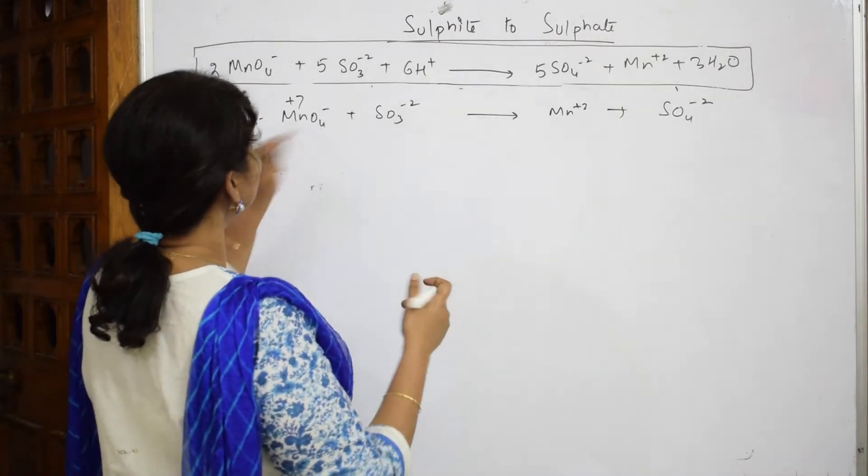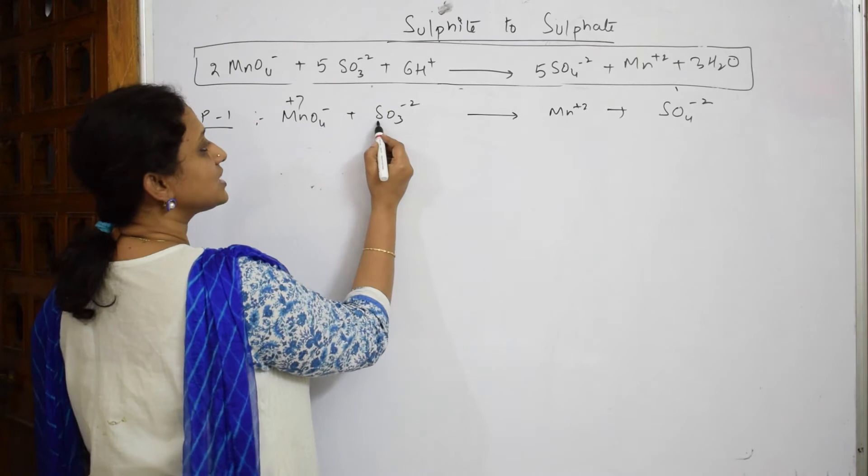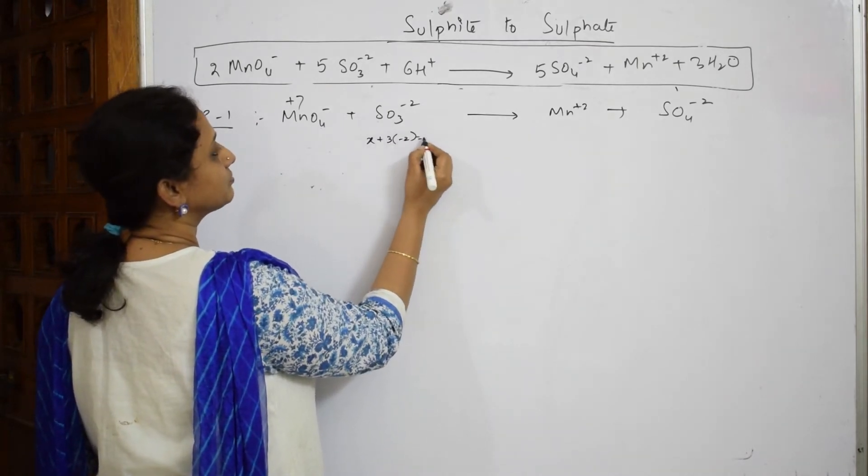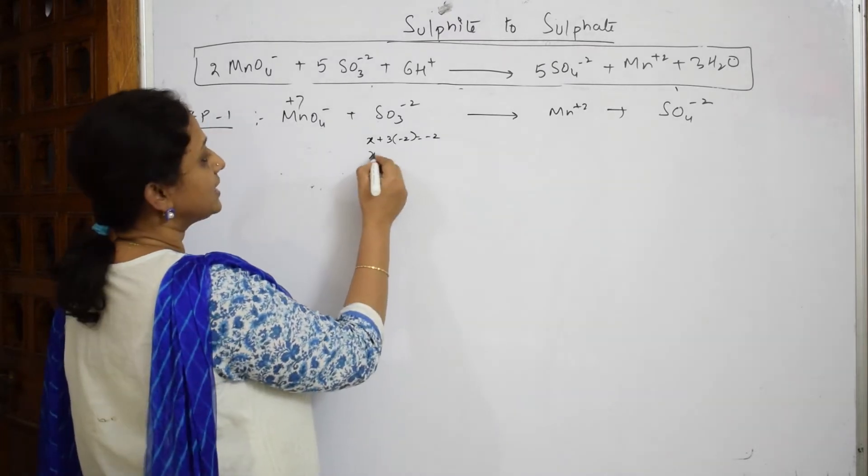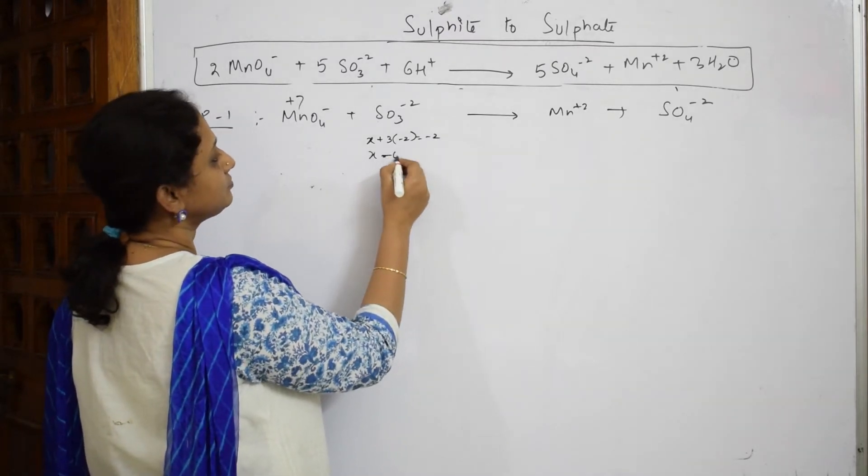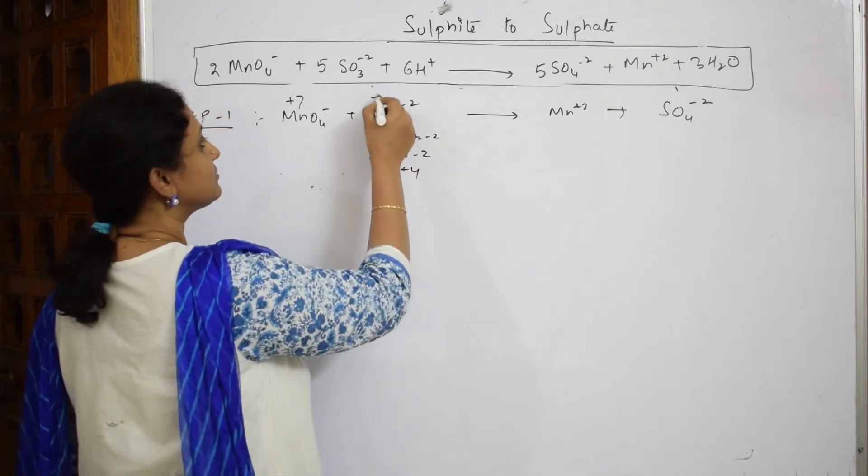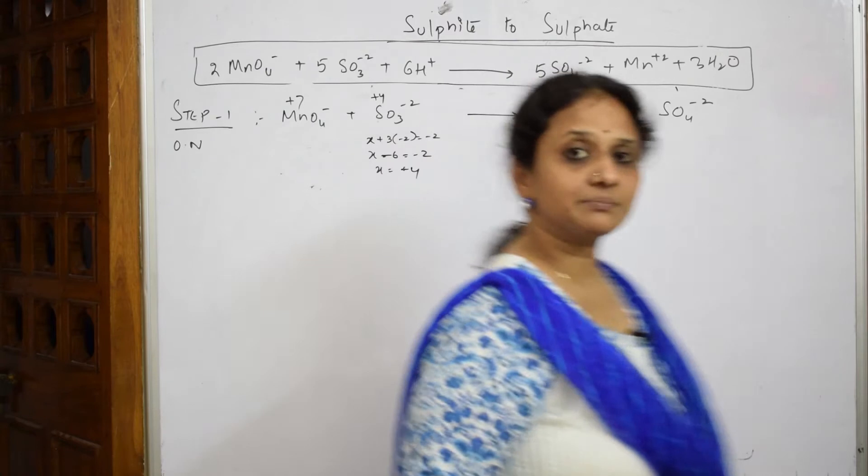Now what do you have? You have plus 7 here and let us start with sulfur. Now sulfur when I have to calculate X plus 3 times minus 2 minus 2, when I solve this I get plus 4. Now write sulfur valency is 4.